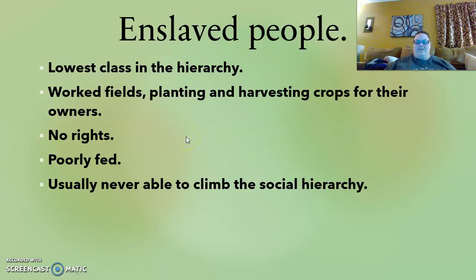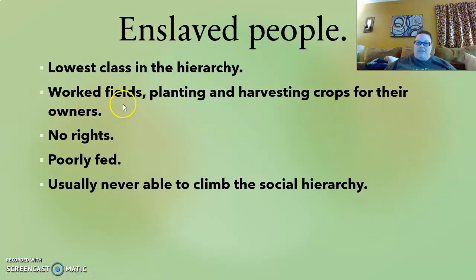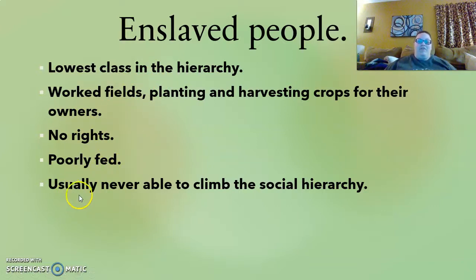And as is so often the case in social hierarchies, the bottom lowest layer is the people who were enslaved. They were the lowest class. They worked in the fields, planted and harvested crops for their owners. Enslaved people had no rights, were poorly fed, and were usually never able to climb the social hierarchy.